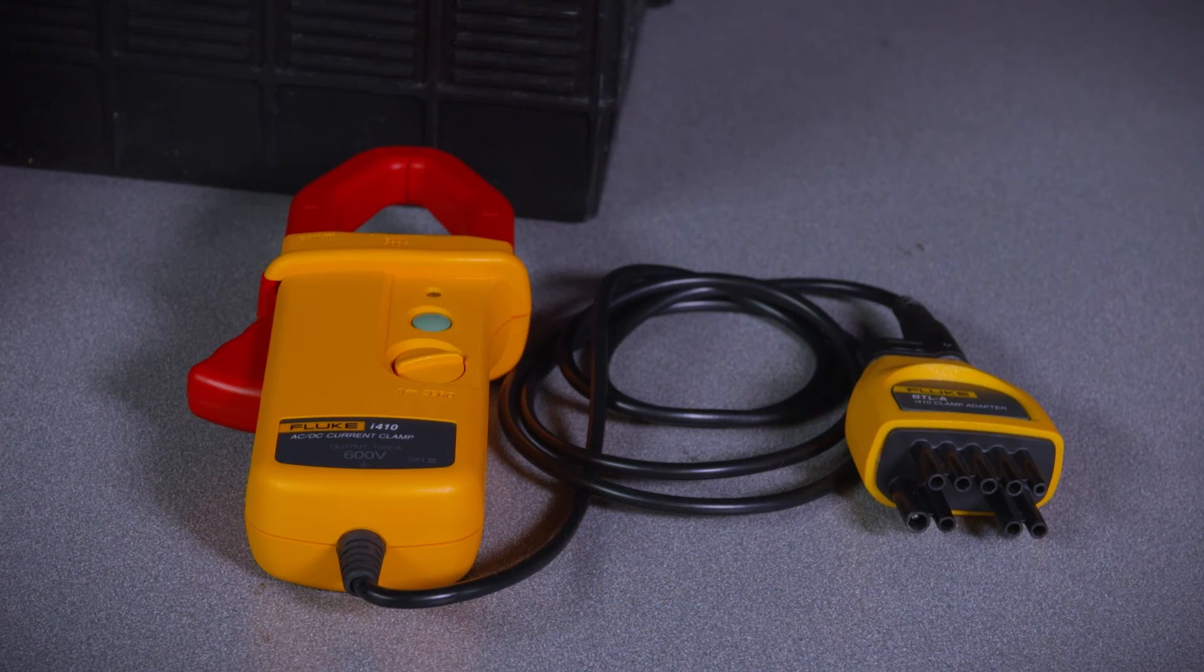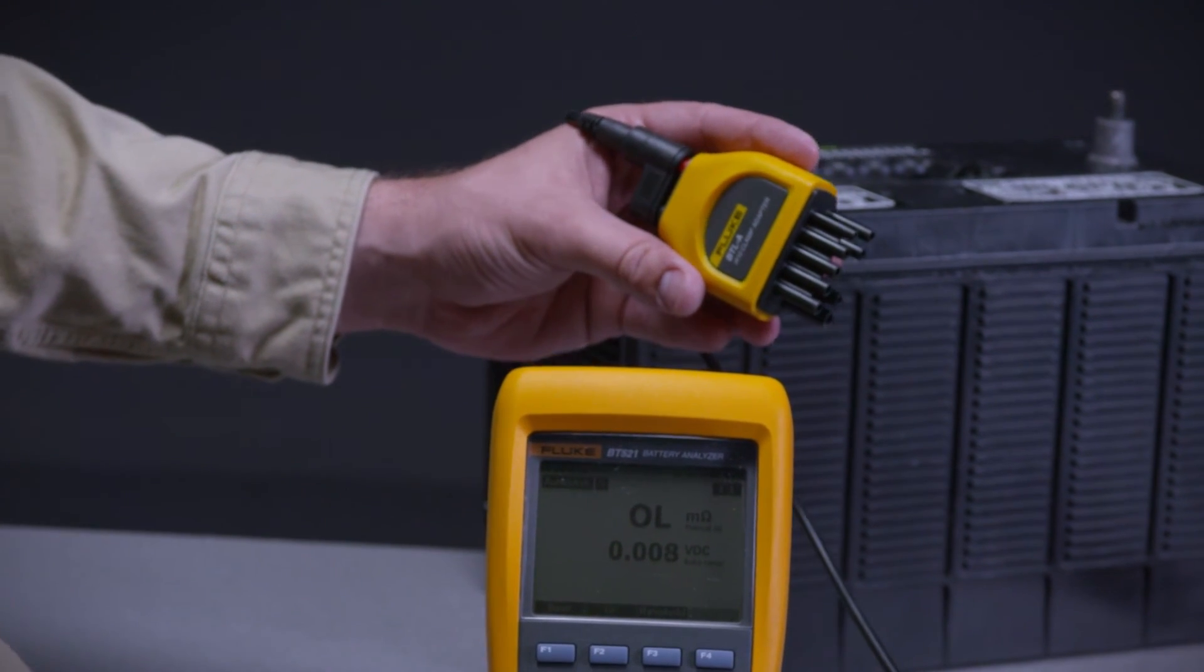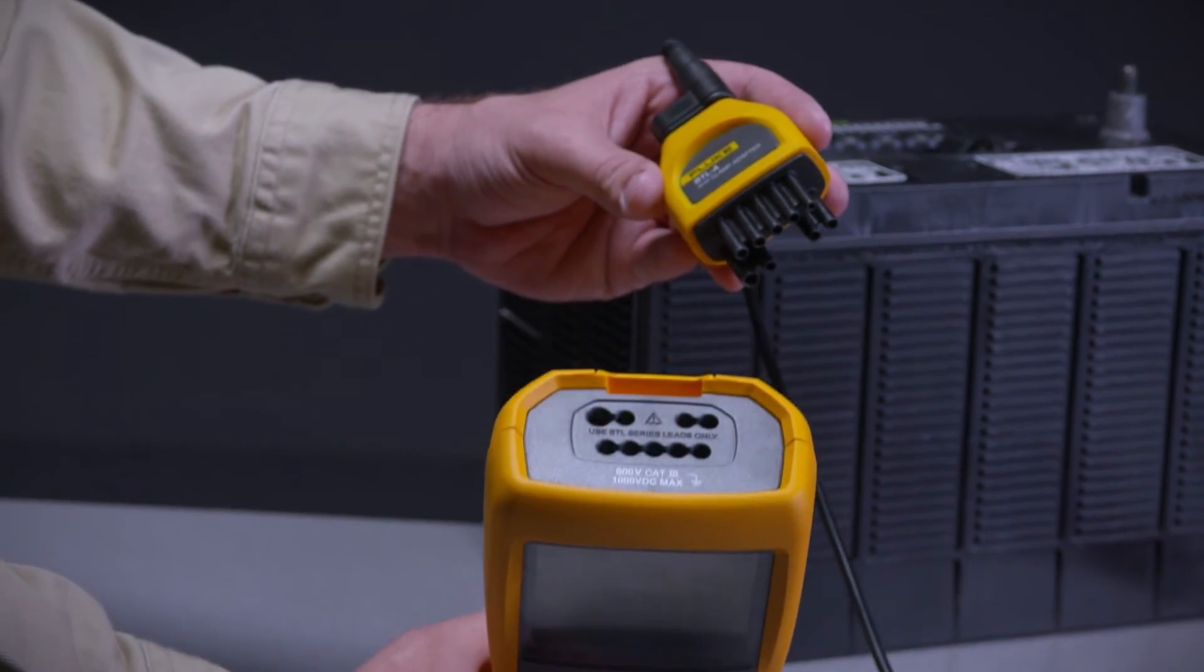To measure current, you'll need a Hall Effect current clamp, which measures DC current. The clamp connects to the battery analyzer measurement ports using this 8-pin adapter.